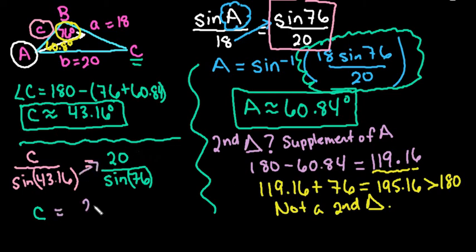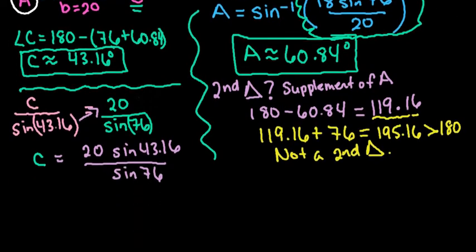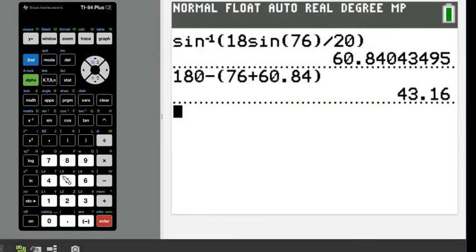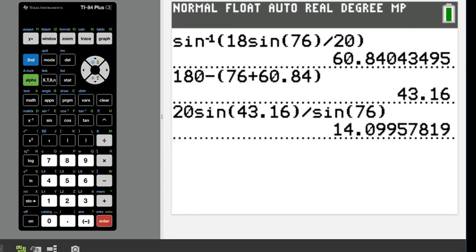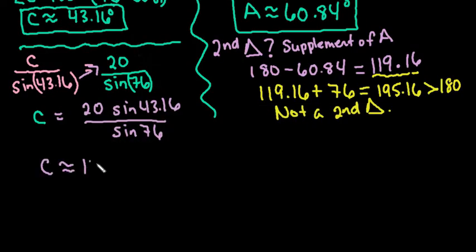So now to simplify, all we would have to do is do 20 sine 43.16 divided by sine of 76. So grab our calculator. Let's go ahead and plug that in. And I would just say 20 times the sine of 43.16 divided by the sine of 76. Make sure you close your parentheses behind your sine so that your calculator doesn't find the sine of the wrong thing. And we end up with 14.0996, or in this case, it would be easiest just to round it to 14.10. So we're going to say that C is approximately 14.10.